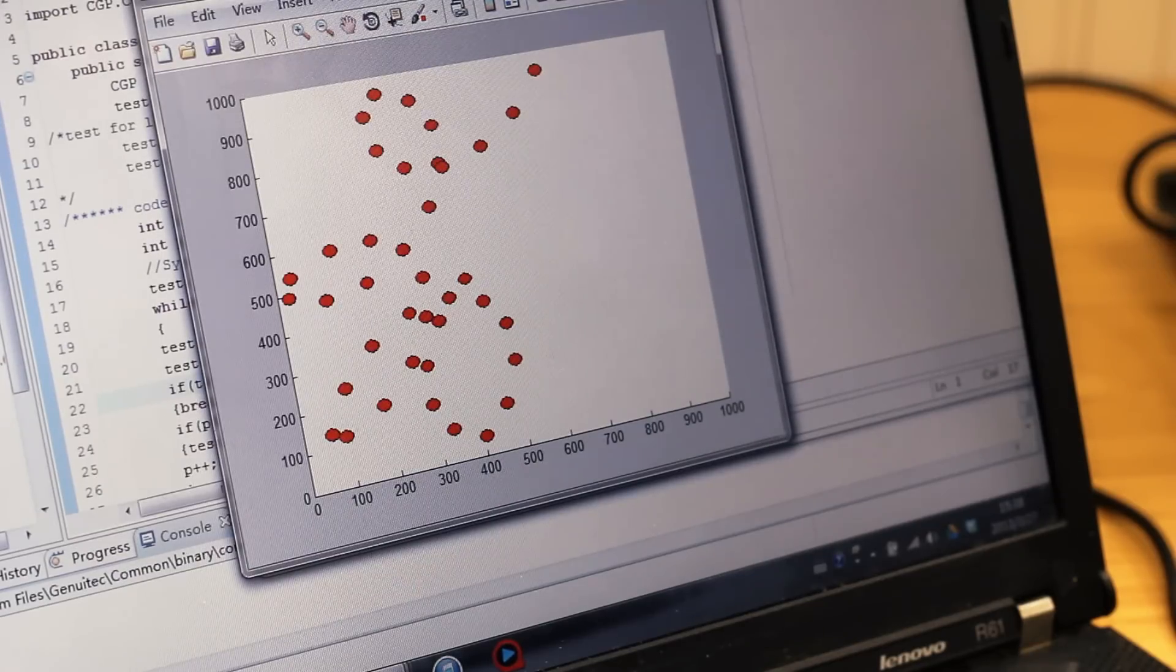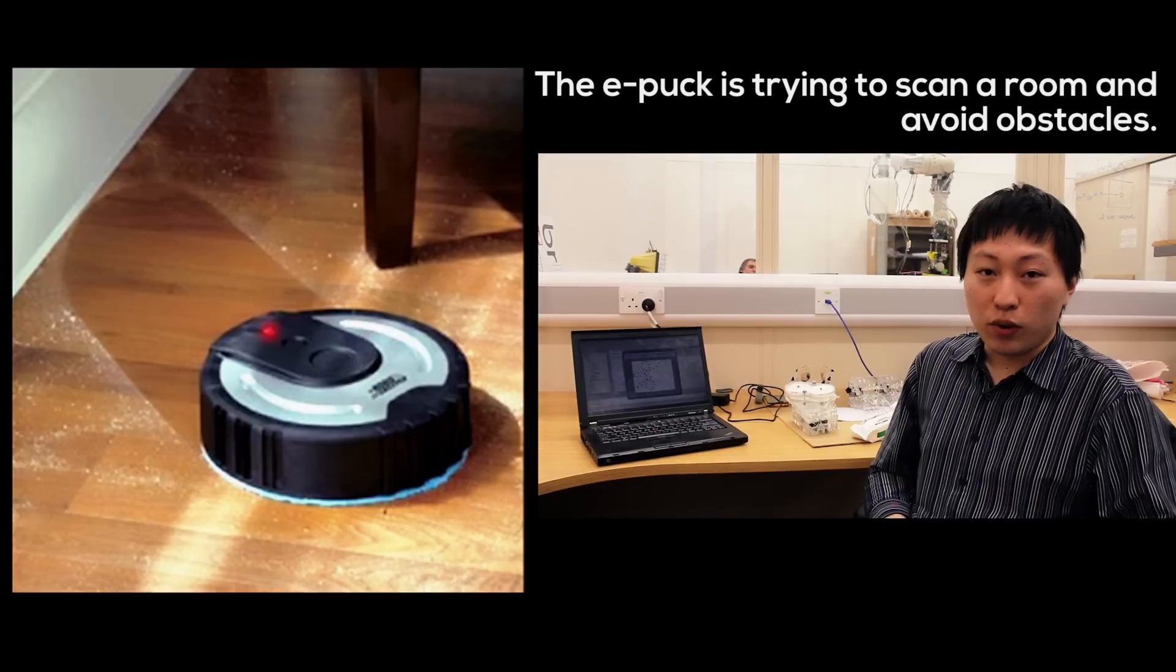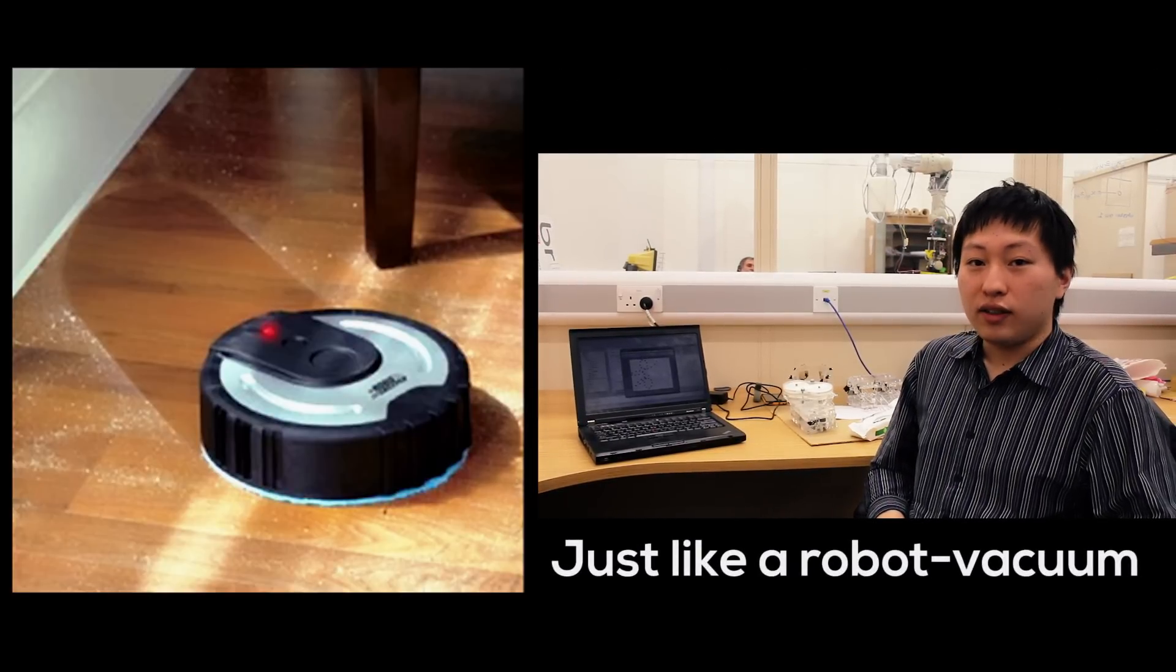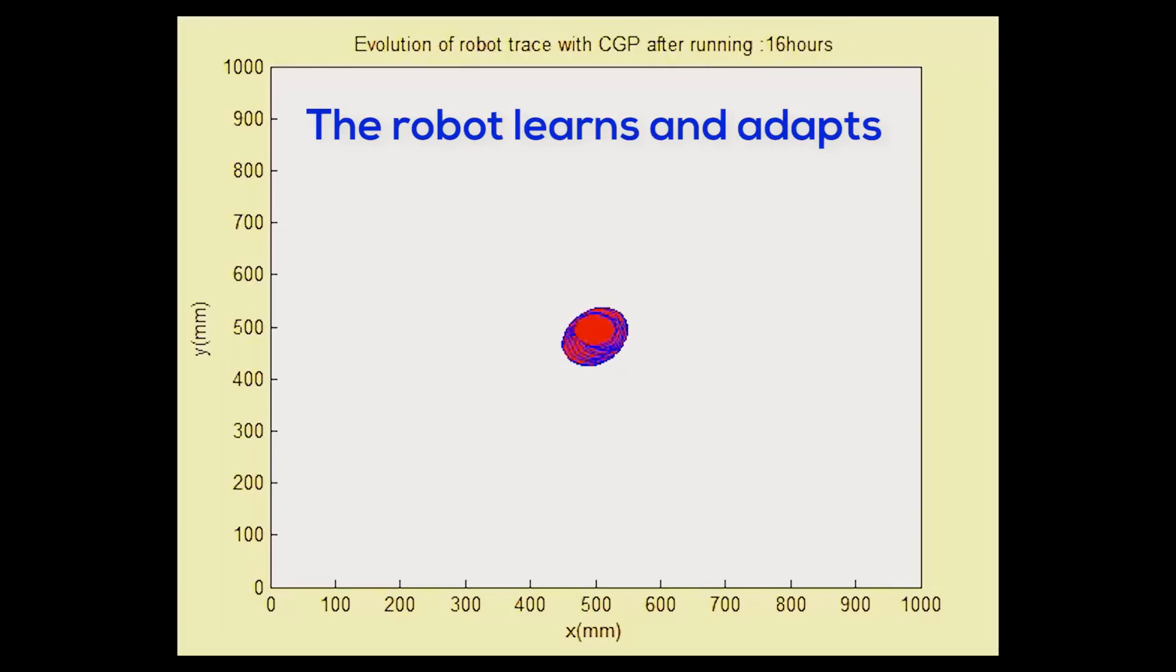We used MATLAB to simulate the driving of a small robot named the EPOC. In other words, the computer can find a better controller by itself with Cartesian genetic programming, just like the evolution process of animals and human beings.